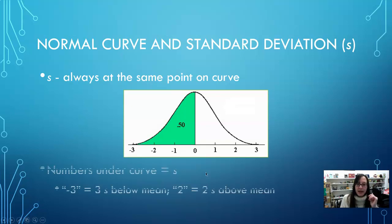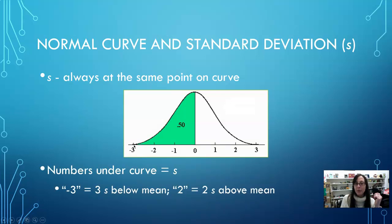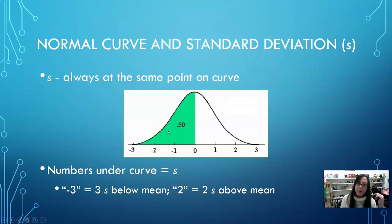So minus three means we're way out in the tails, three standard deviations below the mean. Or if we're at plus two, that means we're two standard deviations above the mean. The center is the mean, so it's zero because you are at the mean. We can see that half of our sample is on one side of the mean and half is on the other side — that's what the 0.5 designates.